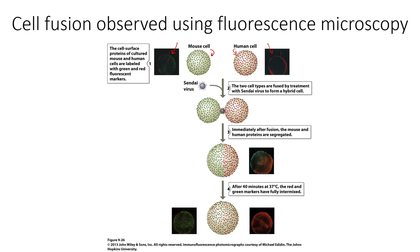Right after this fusion caused by the virus, you have one big cell, but you can see that the proteins are segregated. The green mouse proteins are still on the mouse side, and the red human proteins are still on the other side. But if you leave that cell alone for about 40 minutes at 37 degrees Celsius, then we can start to observe this lateral movement — the free diffusion of both the green and the red surface proteins. They are not constrained; they're able to move freely around the cell and fully intermix.